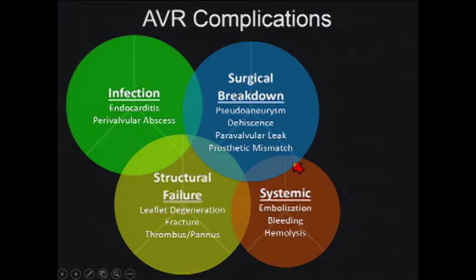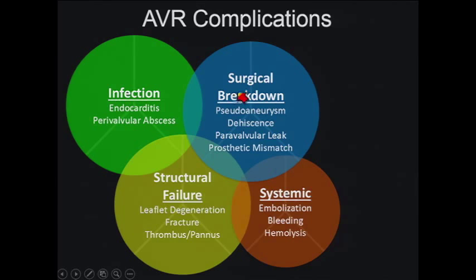There's a boatload of complications, and I like to clump things into different categories. For aortic valve complications, infection is certainly a large category — endocarditis, perivalvular abscesses — with overlap with other categories including dehiscence and pseudoaneurysm, which can also occur from surgical breakdown at the suture lines themselves. Structural failure involves the leaflets — whether they degenerate or fracture. Finally, there's a category we won't cover in depth: systemic manifestations including embolization, bleeding from anticoagulation, and hemolysis related to the valve — that's really more for the clinicians.